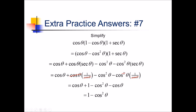This should look familiar because we have the identity sine squared plus cosine squared equals 1. If we subtract cosine squared from both sides, we see that sine squared and 1 minus cosine squared are actually the same thing. So this whole expression converts to sine squared of theta.